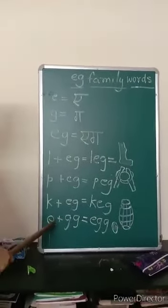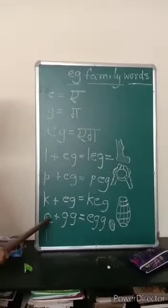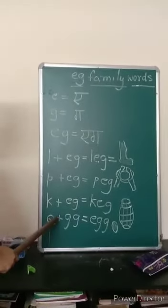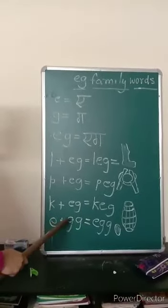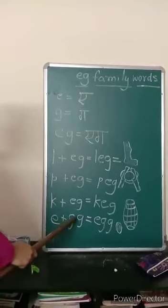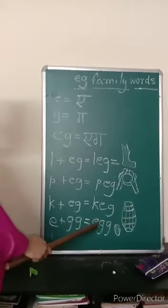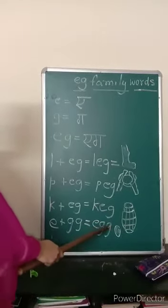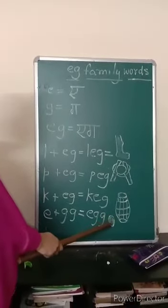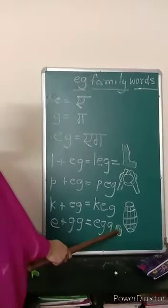Now this is E. E says E, and G says G. Then E and G, egg. So here is a picture of egg. Egg you eat.